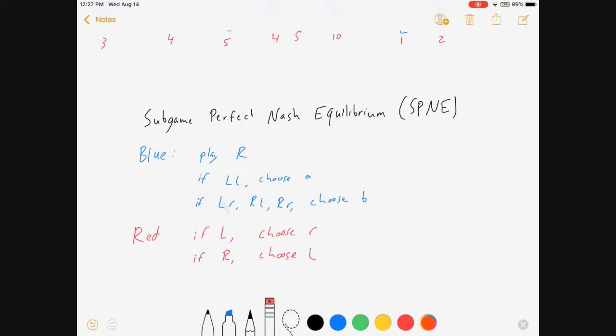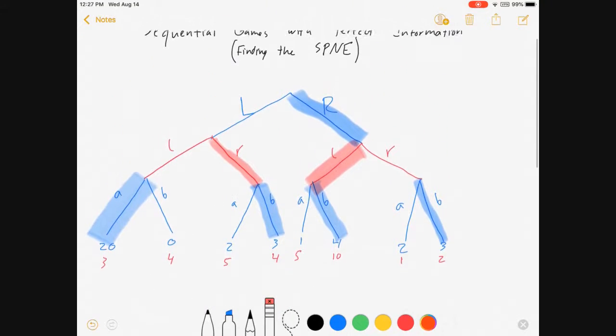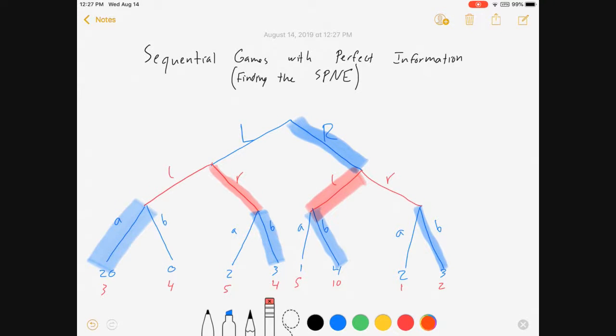So I don't know how your professor does notation. You'll have to figure that out. But there's the basic logic of finding an SPNE when there's perfect information. Hope it was helpful for you guys. Good luck, happy econ-ing, and enjoy your game theory.